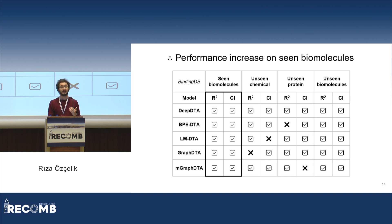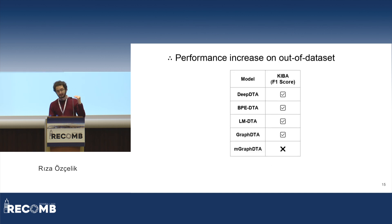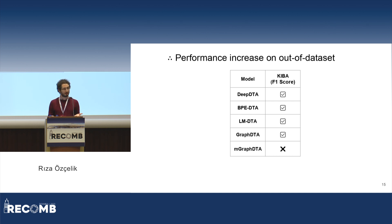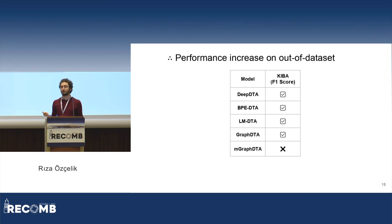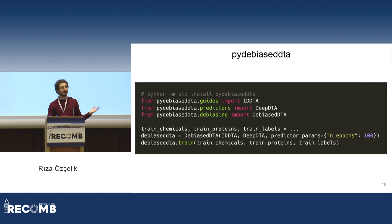Last but not least, we tested models trained with Bias DTA on an out-of-dataset test set: we trained on BindingDB data and then tested on a completely different dataset called KIBA. Again, for four out of five models we observed a performance increase, meaning that Bias DTA can handle the most challenging setting as well. Since Bias DTA is model-agnostic and representation-agnostic, we believe it is very important for training generalizable affinity prediction models, and we have published Bias DTA as a Python library that you can quickly install and use to train your own models with this framework.